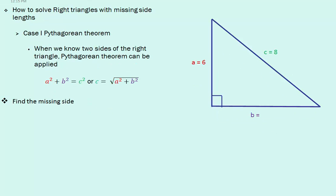We can solve for a missing side of a right triangle by using Pythagorean's Theorem. We can use Pythagorean's Theorem when we know two sides of the right triangle. Pythagorean's Theorem is a squared plus b squared equals c squared. If we're trying to solve for c, we can take the square root of a squared plus b squared.